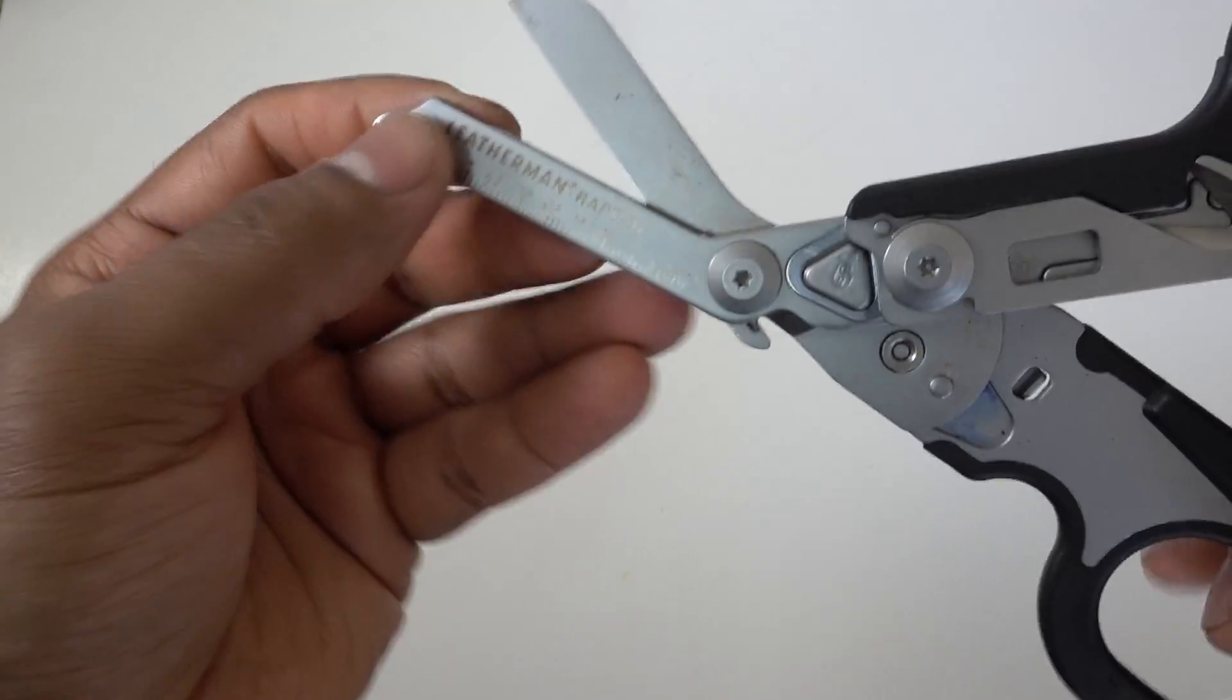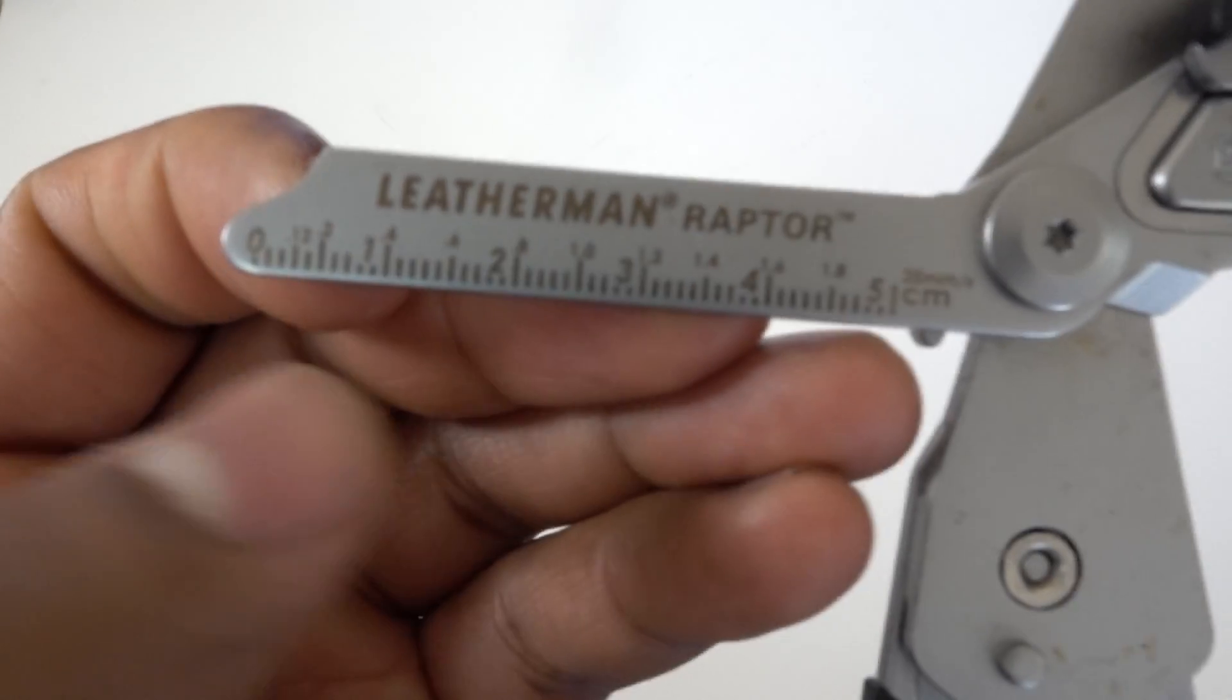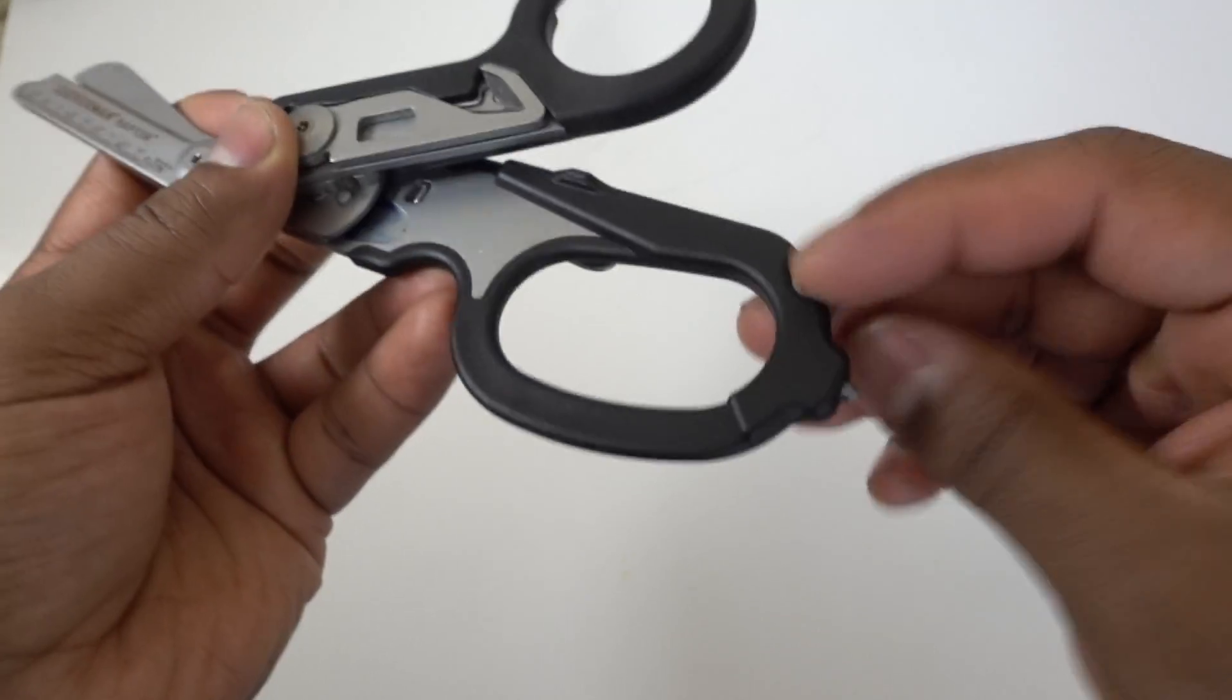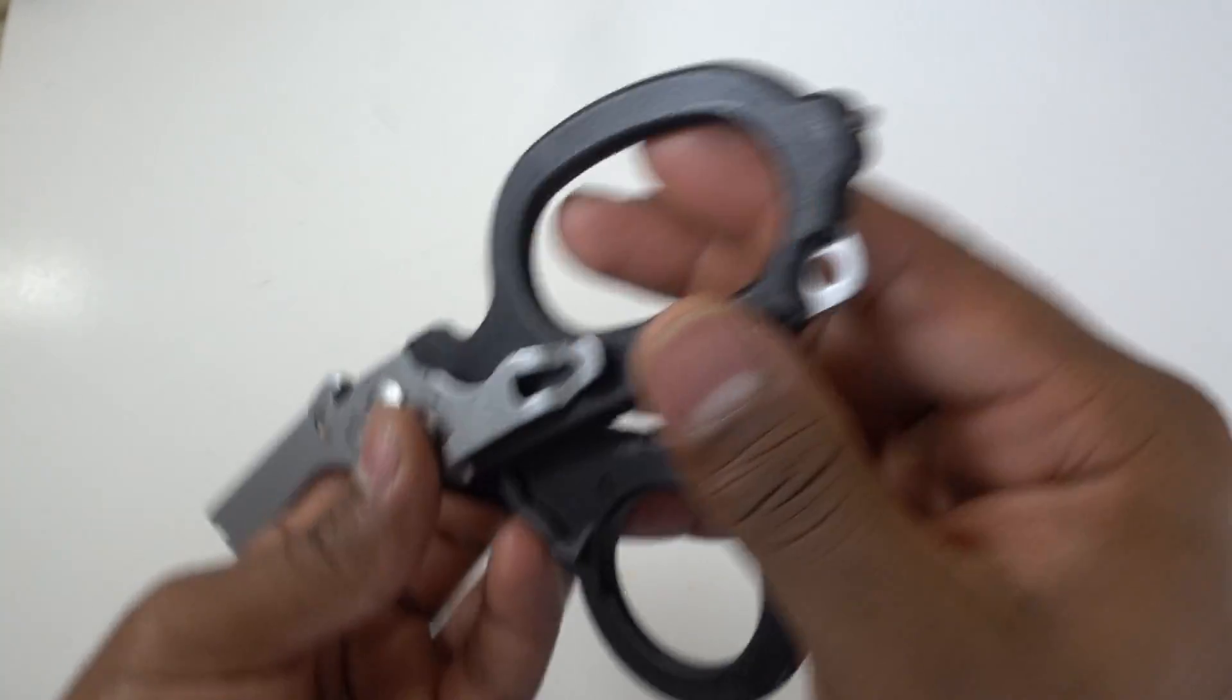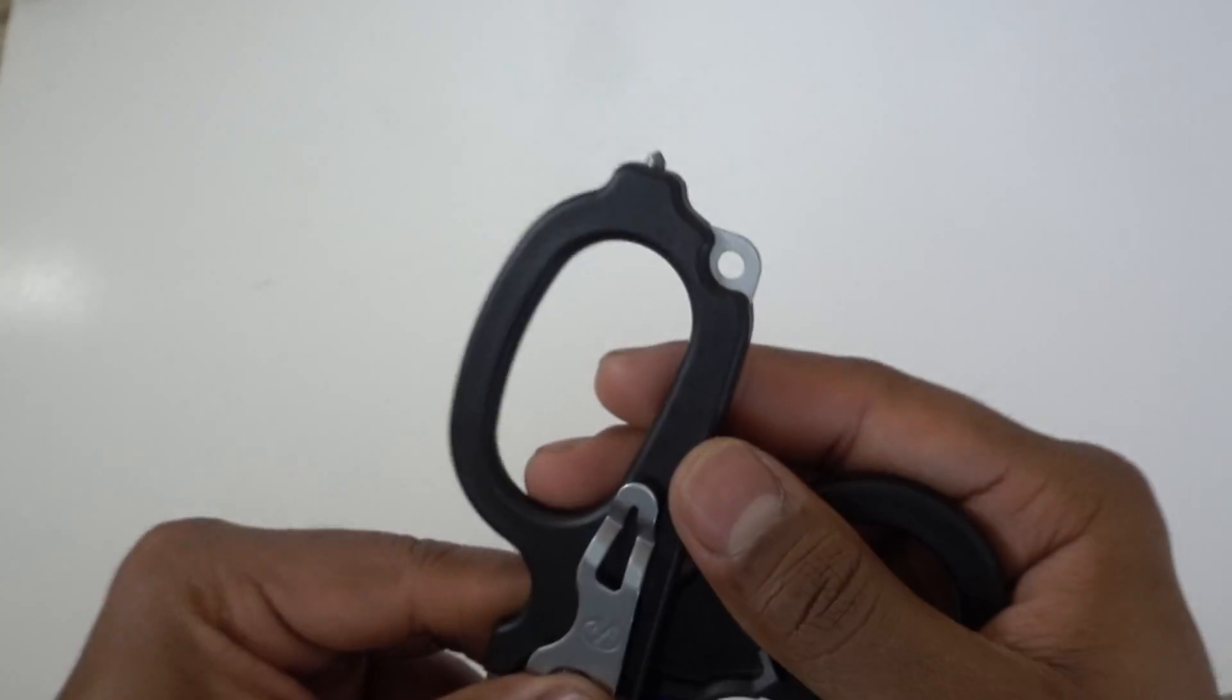You will not find a scissor like this in the market. It says Leatherman Raptor, it has a little scale over here on the handle, a ring cutter hole right here, and also has a glass breaker.